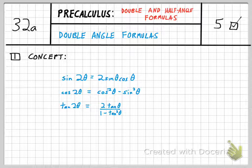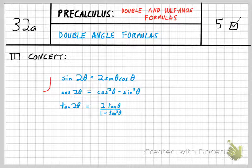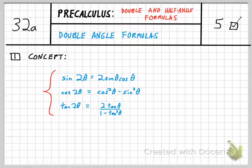Basically, we've got three new formulas to add to our trig identity list, and these are called the double angle formulas. Real quickly: sine of 2θ equals 2 sine θ cosine θ; cosine of 2θ equals cosine squared θ minus sine squared θ; and tangent of 2θ equals 2 tangent θ over 1 minus tangent squared θ.